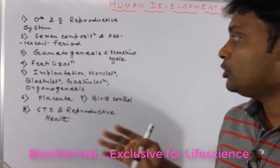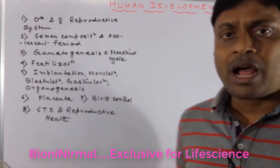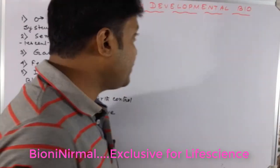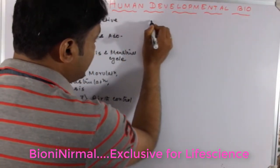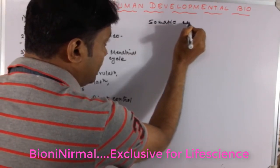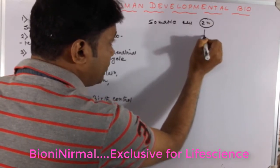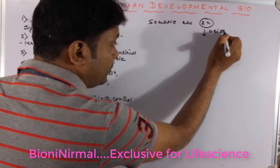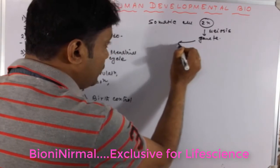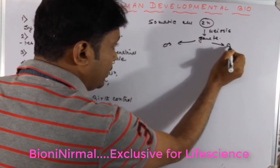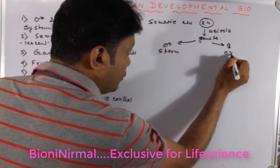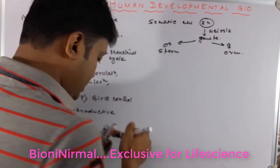Now I am going to give you the basic concept about human developmental biology. In our body there are somatic cells, which are diploid. By the process of meiosis the gamete is actually formed — a male gamete and a female gamete. The male gamete is called the sperm and the female gamete is called the ovum.